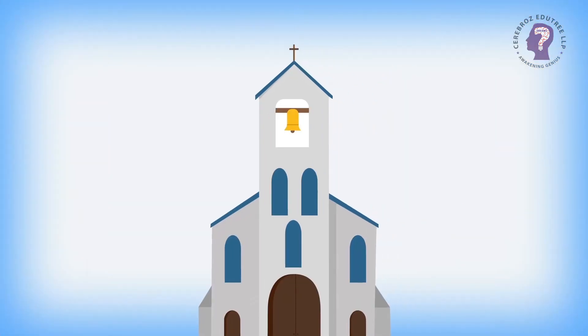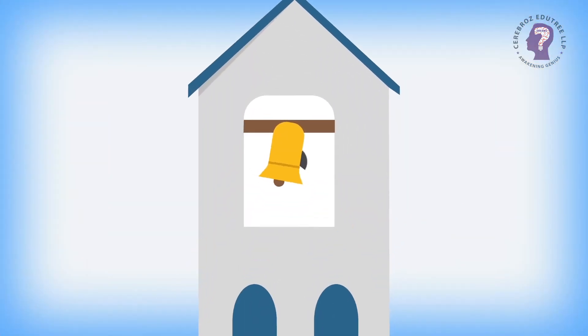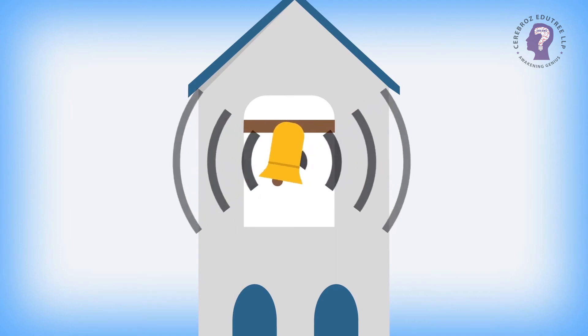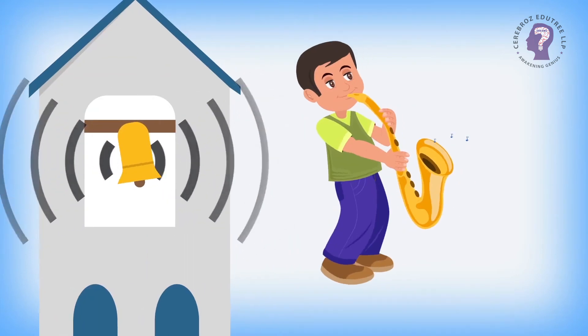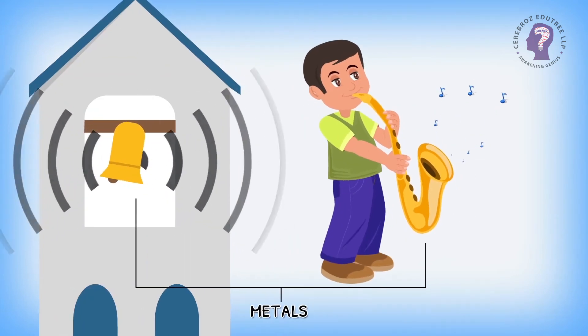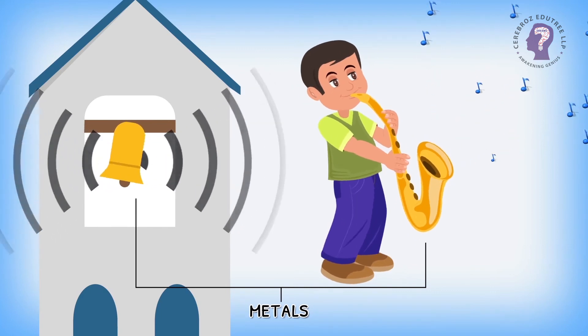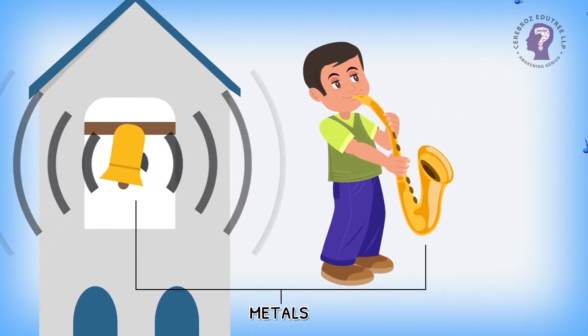Metals have the property of being sonorous, that is, they produce a loud ringing sound when struck. That is why metals are used to make many musical instruments and bells.